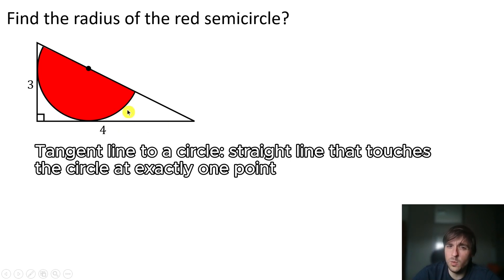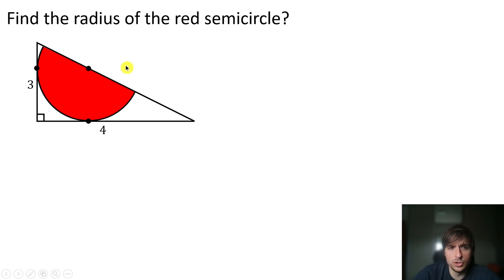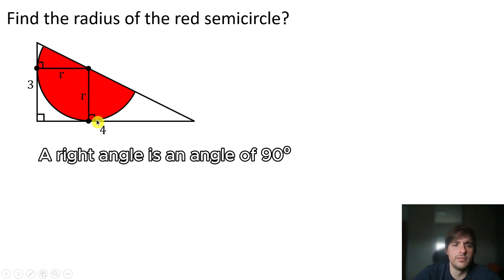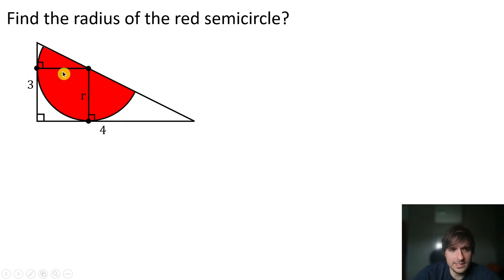We have two tangent points, so we can now draw the radius of the circle. The radius of the circle forms a right angle with the tangent lines. So here we have a right angle and here we have a right angle.